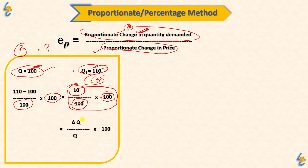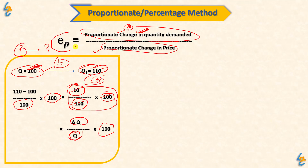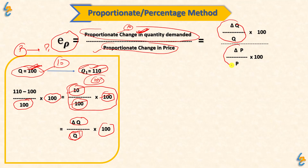We can write this as Delta Q upon the initial value Q, multiplied by 100. So the formula of Price Elasticity of Demand can be written as: (ΔQ / Q × 100) divided by (ΔP / P × 100). Simplifying, the 100s cancel, giving us ΔQ/Q divided by ΔP/P.